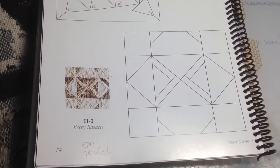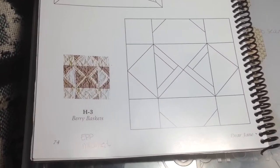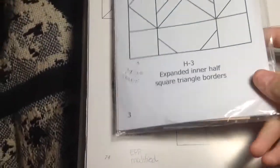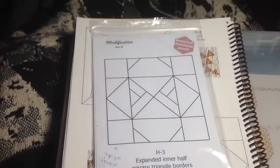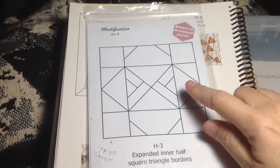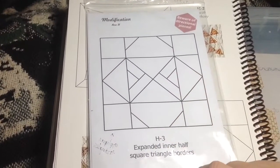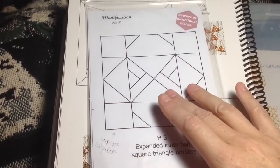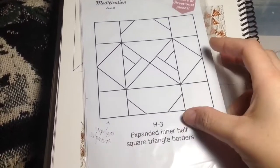So it's time to move on to the H3 block, and once again this one is a modified block in the book. They've made these a little bigger and all that kind of thing so that it's easier to assemble with the English paper piecing method.